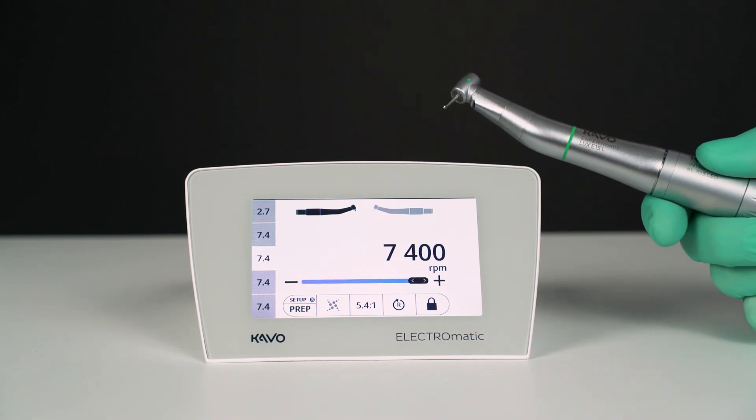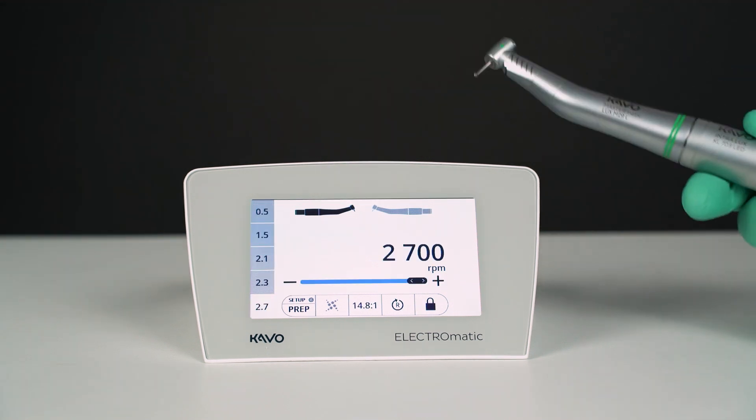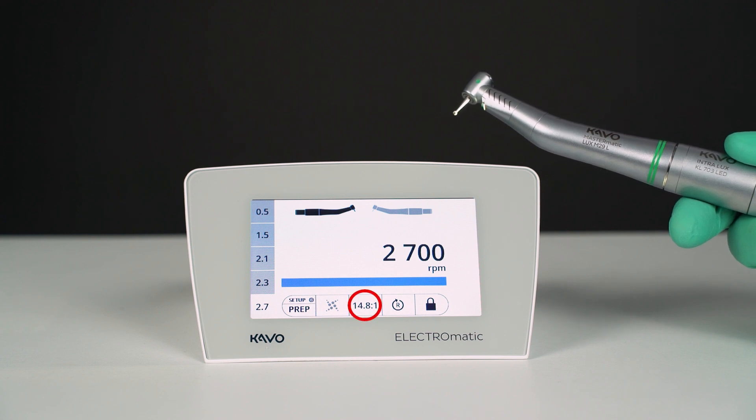The speed reduction ratio of the Expertmatic E15L, which is a 5.4 to 1, has to be set on the display. The ratio reduces the motor speed of 40,000 rpm down to 7400 rpm burst speed. The speed reduction ratio of the Mastermatic M25L and the Intrahead L67, which is a 14.8 to 1, has to be set on the display.